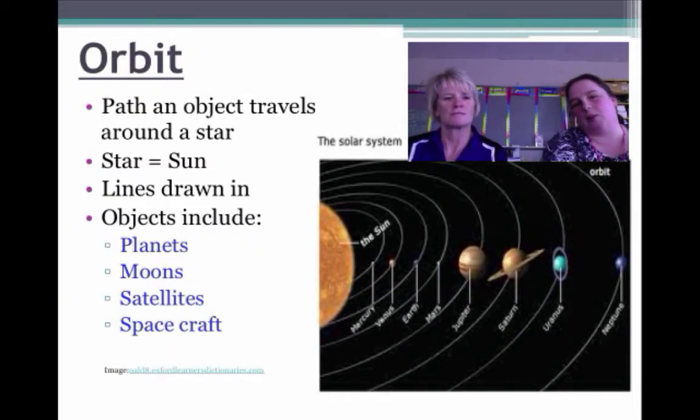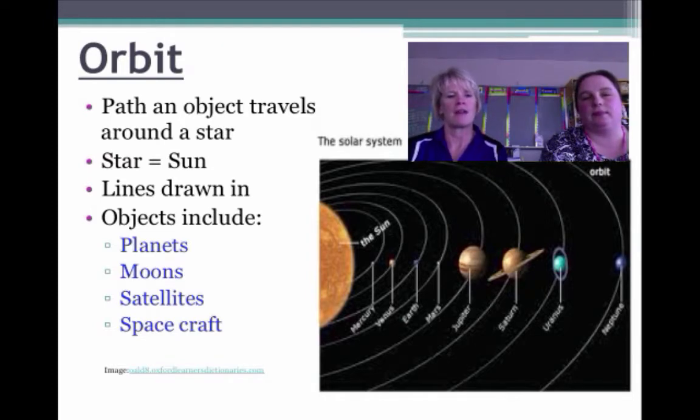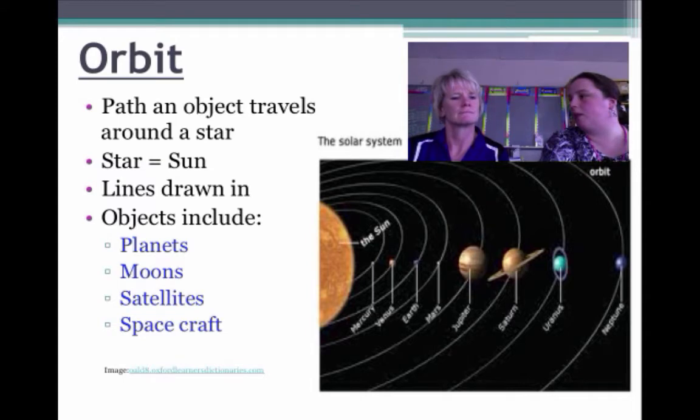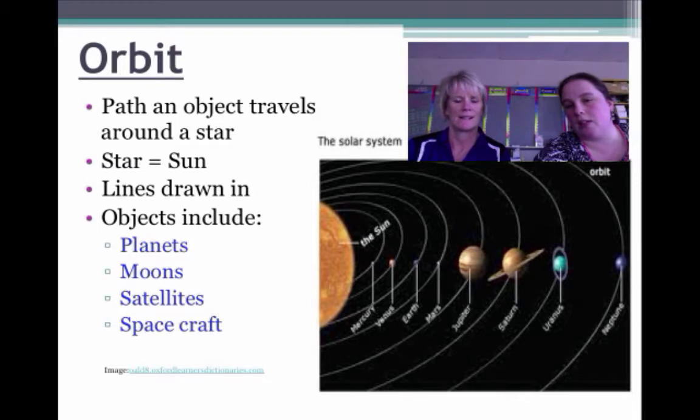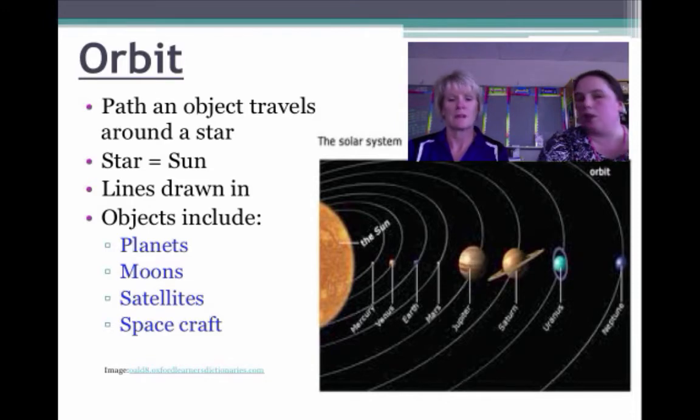All right. So you want to read this one to them? Sure. For orbit, the path an object travels around a star. So if you wanted a definition, that would be your definition. A star equals the sun. That's our only star that we have closest to us. Lines drawn in. So that's these white parts that you guys are seeing down here. Those are the orbit paths and you've probably seen pictures of those before. So what they're really drawing in there is the orbit.